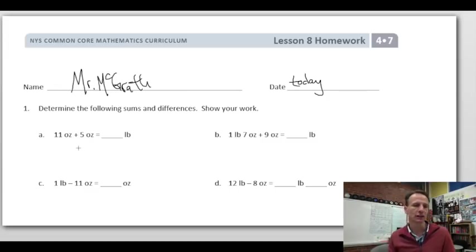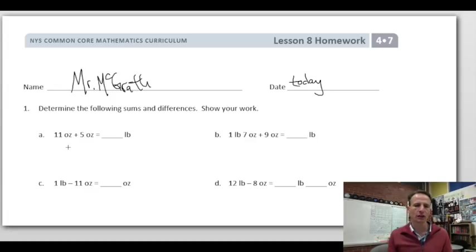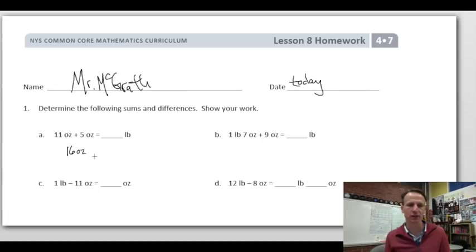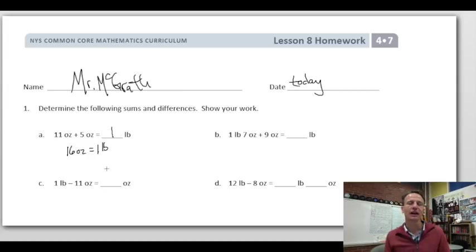First problem: 11 ounces plus 15 ounces. We're asked for the answer in pounds. Add those together and you get 26 ounces — wait, let's recheck: 11 plus 15 is 26... actually we add to get 26 ounces. But 16 ounces equals one pound, so the answer is one pound and 10 ounces.